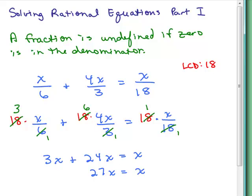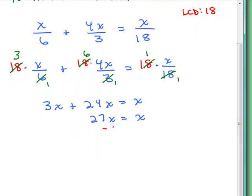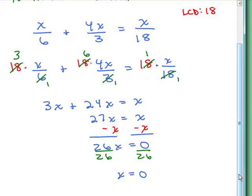Now remember, we're solving an equation with just one variable. So what we want to do is put the variables on one side and constants on the other. A lot of people get stuck right here. Try to divide by x and you can't do that. You have to subtract x from both sides. So we're going to subtract 1x from both sides and that gives us 26x equals 0. And we can divide both sides by 26 and we finally found a solution, x equals 0. Now, remember, it's extremely important to check your answers, especially when you're working with rational equations.